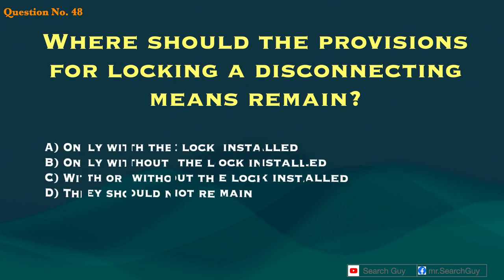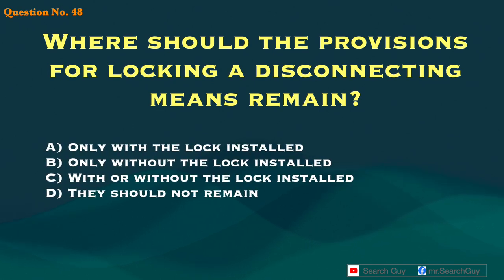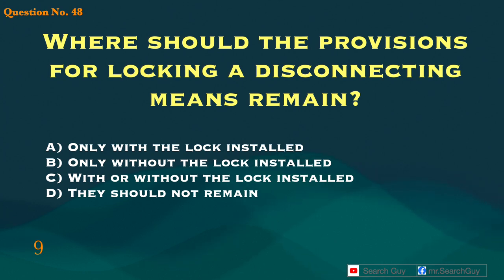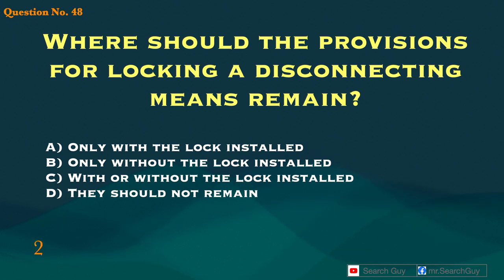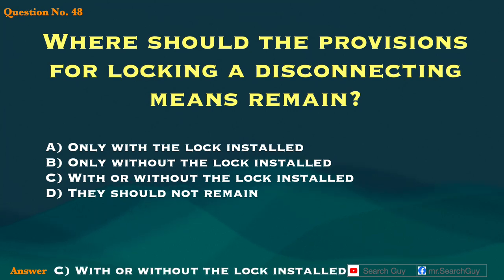Question 48. Where should the provisions for locking or disconnecting means remain? A. Only with the lock installed. B. Only without the lock installed. C. With or without the lock installed. D. They should not remain. Answer: C. With or without the lock installed.